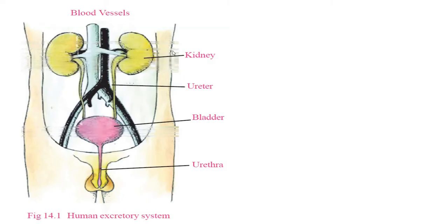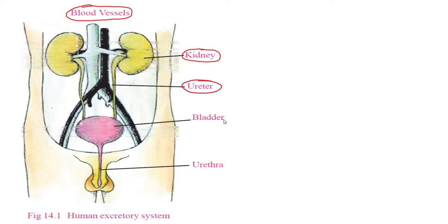In the human excretion system, you can see blood vessels and kidneys. Toxic compounds dissolved in water pass through the ureters, then through the bladder and out through the urethra.